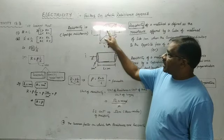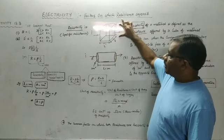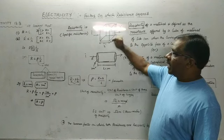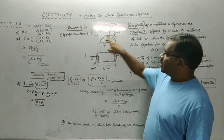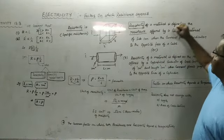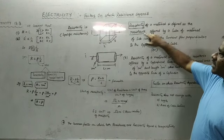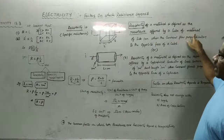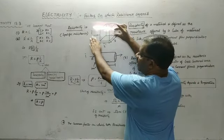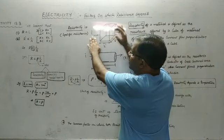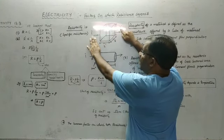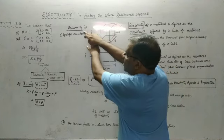Let us consider a cube of material where the height, breadth, and length are all 1 meter — a unit cube. We try to pass current perpendicularly through the cube. Resistivity of the material is defined as the resistance offered by a cube of material of side 1 meter, when current is passed perpendicularly through it.